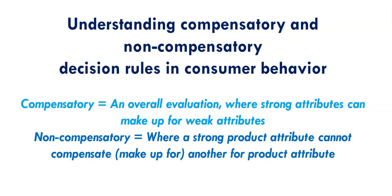In this video we will look at compensatory and non-compensatory decision models in consumer behavior. Compensatory models look at the overall product offering, where strong attributes can make up for weak attributes — they can compensate. Non-compensatory models consider individual product attributes, so a weaker attribute is deemed unfavorable.